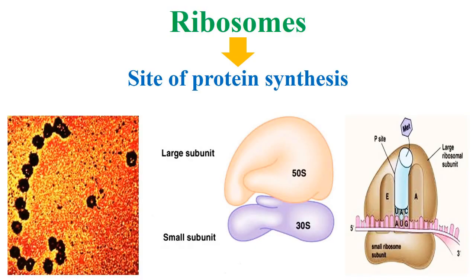Ribosomes are considered the site of protein synthesis. Using their structure, which contains in eukaryotes a large subunit 50S and a small subunit 30S.